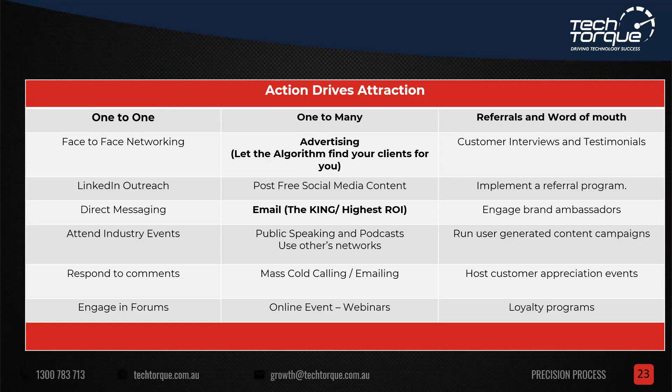Action drives attraction. There are three categories: one-to-one, one-to-many, and referrals and word of mouth. The one-to-many gives you the biggest bang for your buck — you do something once and deliver it to many. This webinar is also going on YouTube where probably 50-80 people will watch it. For referrals and word of mouth — go out there and create loyalty programs and generate user content. Social proof is powerful: if you can demonstrate you've done it, provide testimonials, people will pay more to work with you.